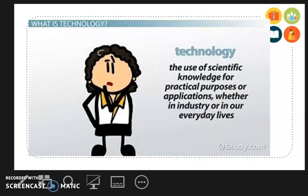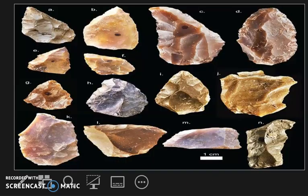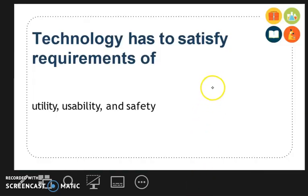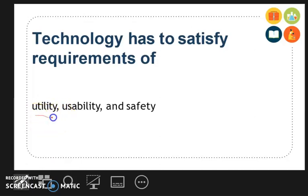Which technology do you think radically changed human evolution? Technology has to satisfy requirements: utility, usability, and safety.